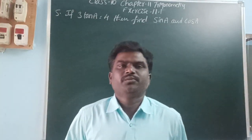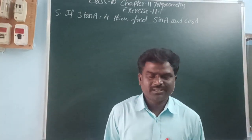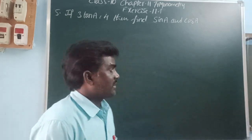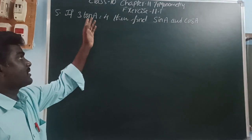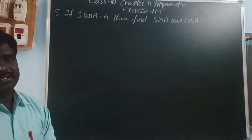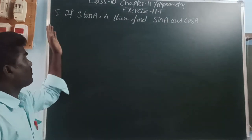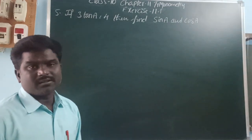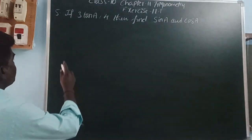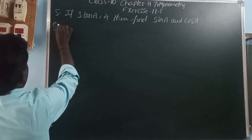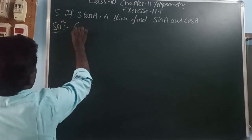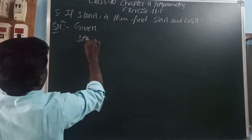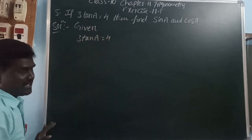Hi, hello, welcome back to our YouTube channel, this is Balakrishna. Today I am going to explain in this video Class 10th Chapter 11 Trigonometry, Exercise 1.1, Question number 5: if 3 tan A is equal to 4, then find sin A and cos A.